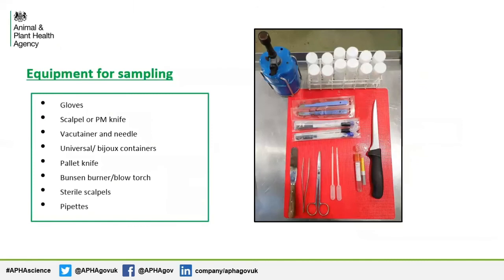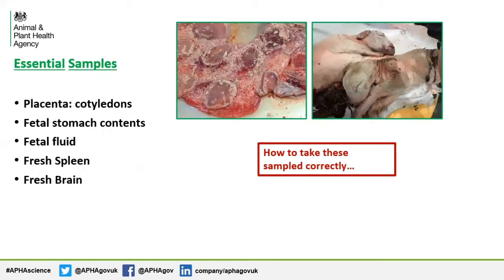Now, let's get on to obtaining samples. On the slide is a list of suggested equipment you will need. It might not be practical to carry searing equipment onto a farm; however, it can be useful if there is a Bunsen burner at the practice for aseptic collection of bacteriology samples. For the most part, placenta, fetal stomach contents, fetal fluid, and spleen will be adequate to gain a diagnosis.